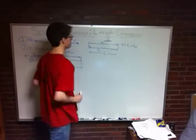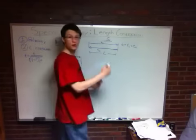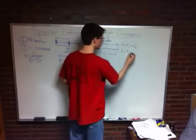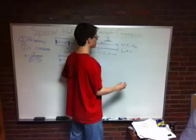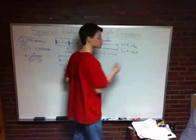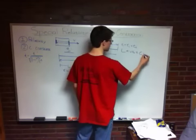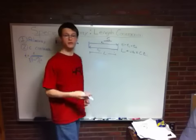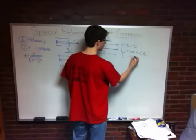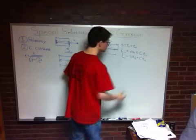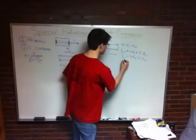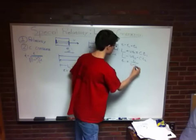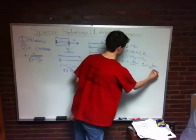On the way there, the distance the particle of light has traveled equals L (the initial distance) plus the extra distance created by the mirror moving away, which is V times T1. That equals the total distance traveled by the light, C times T1. On the way back, it's the same thing except the term is minus, because the mirror is running towards the light: L minus V·T2 equals C·T2. Solving for T1 and T2, we find T1 equals L over (C minus V), and T2 equals L over (C plus V).